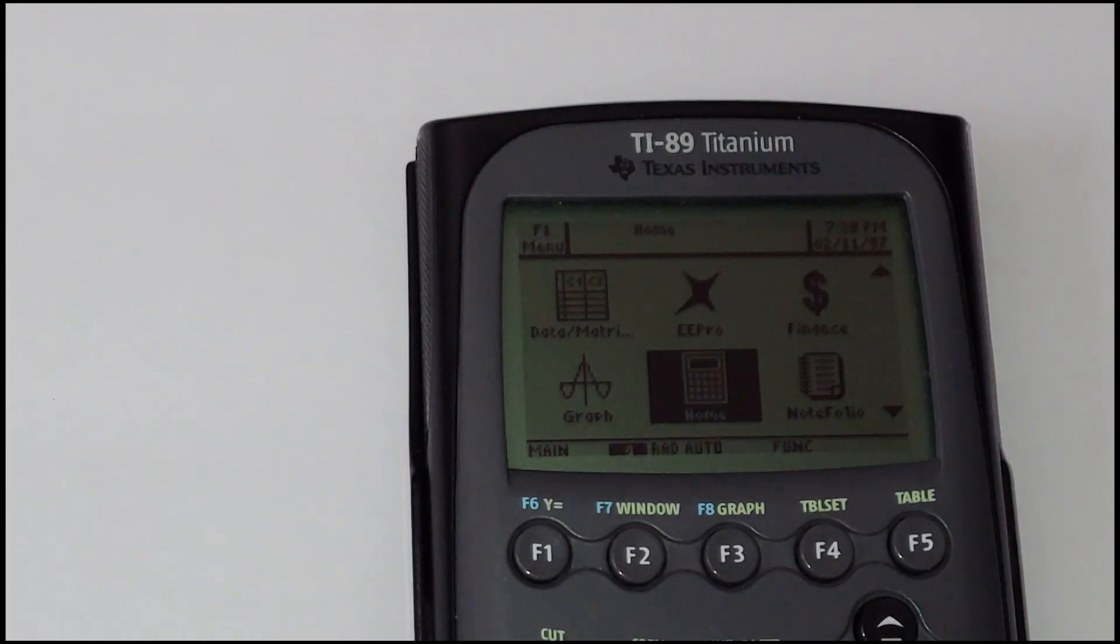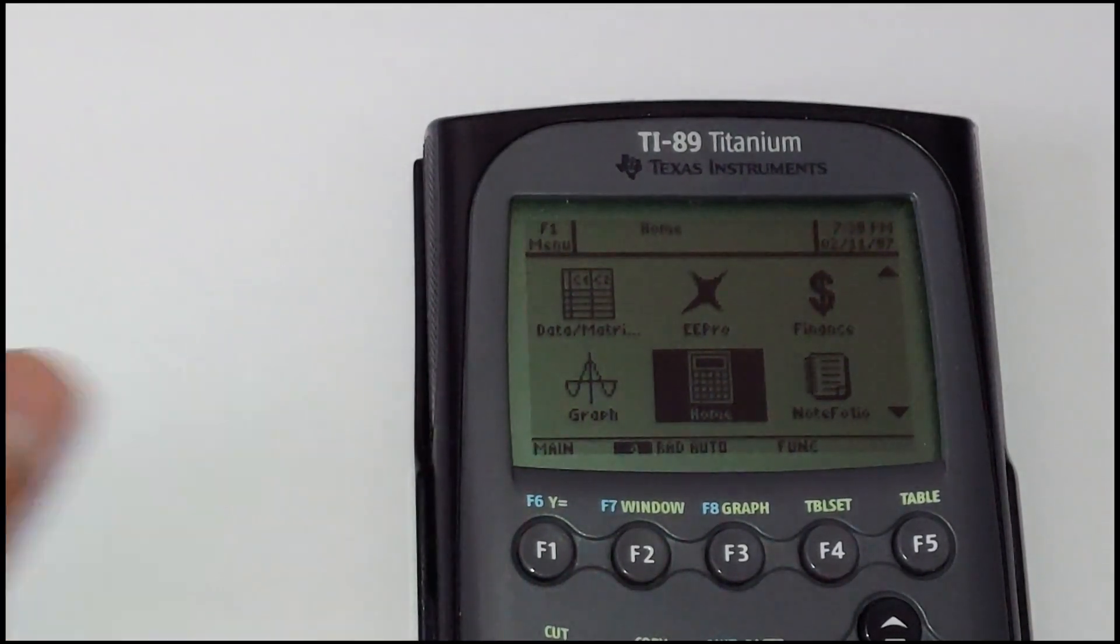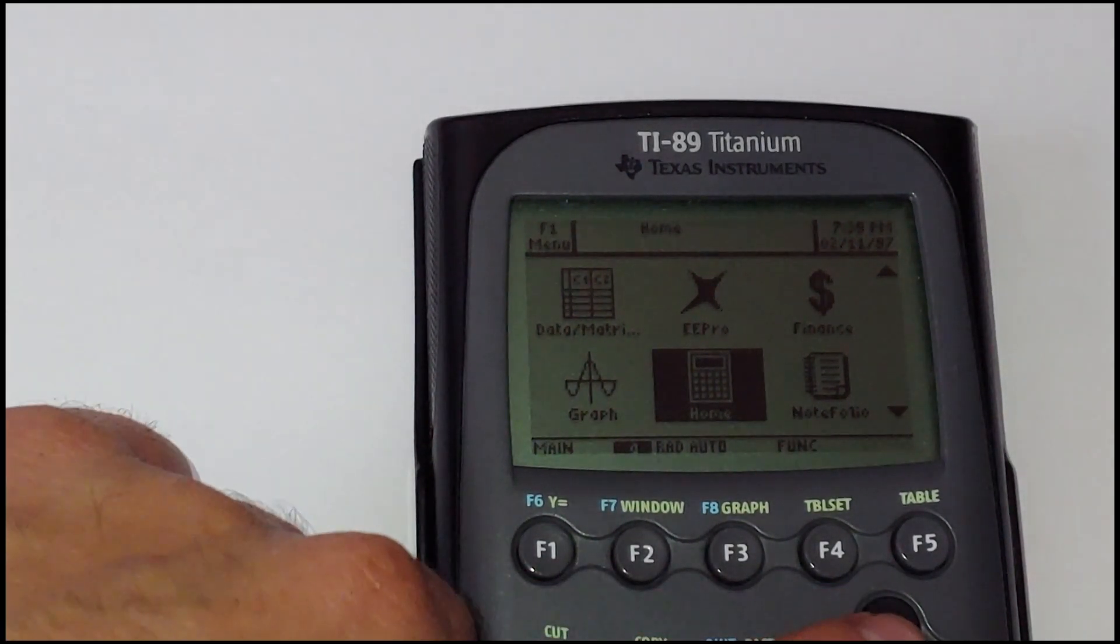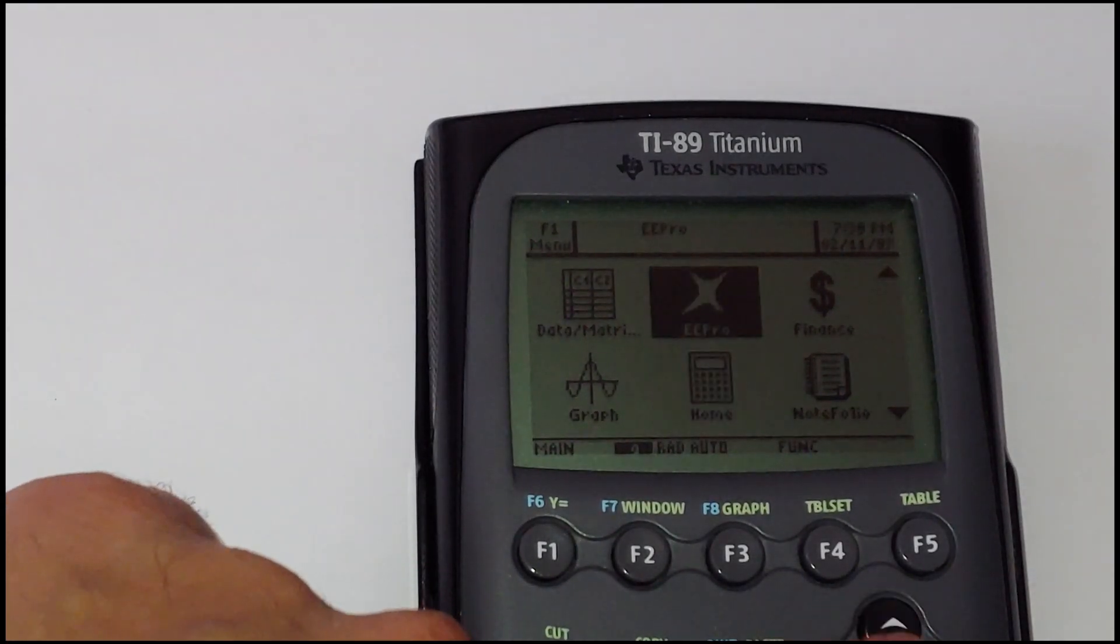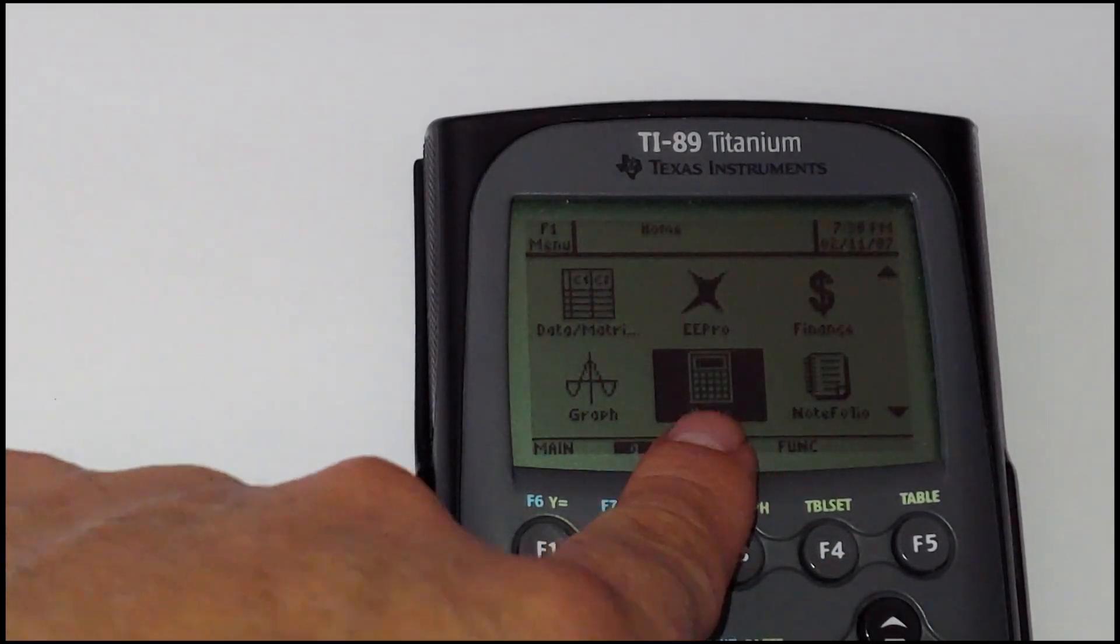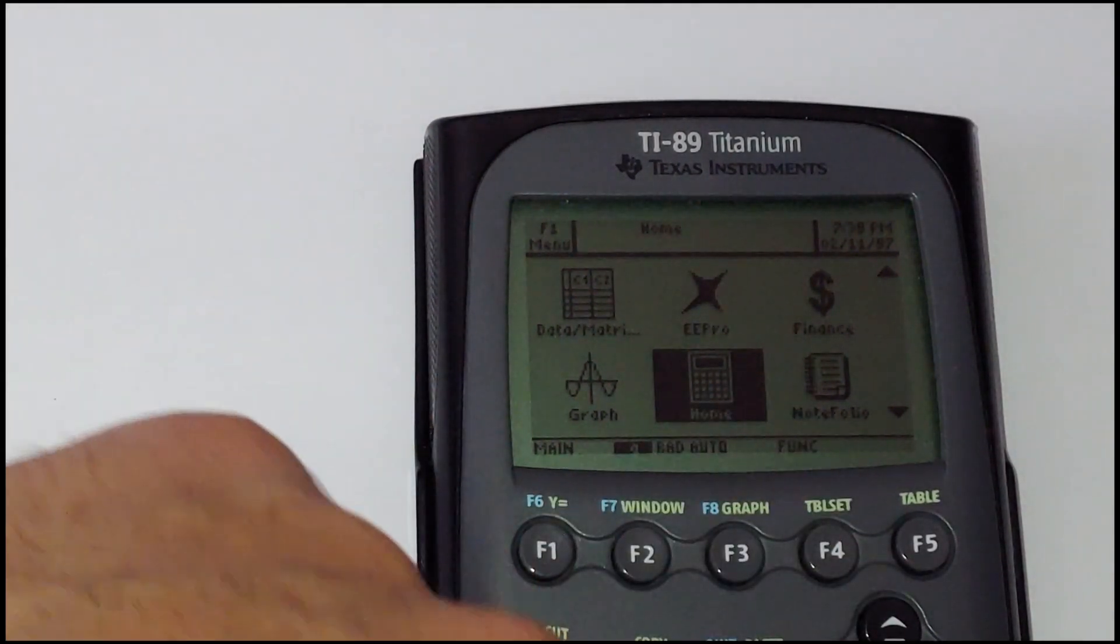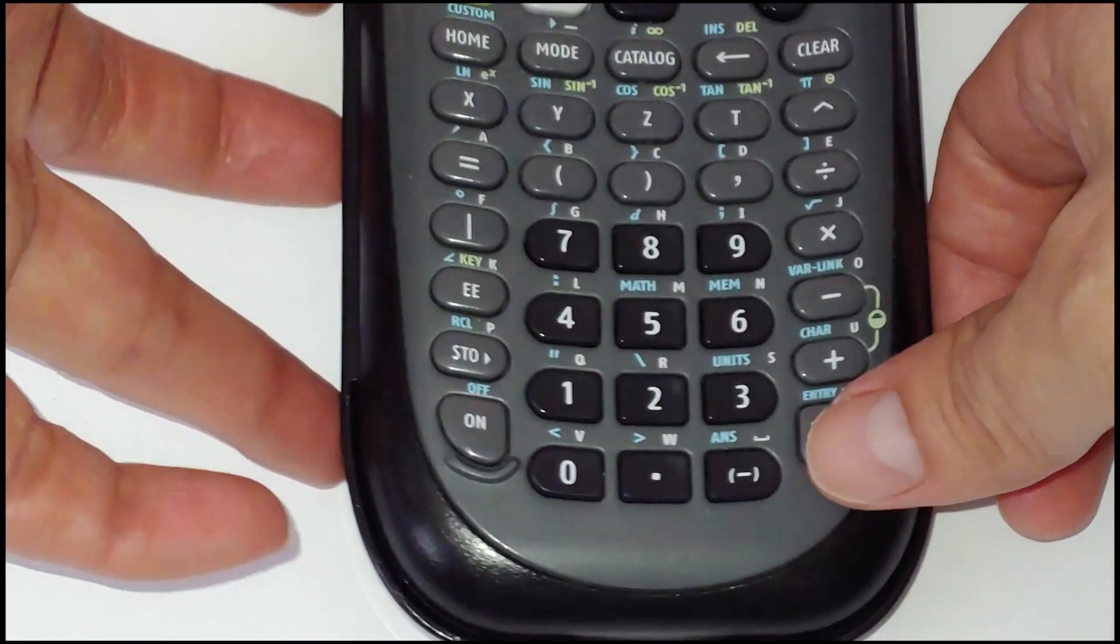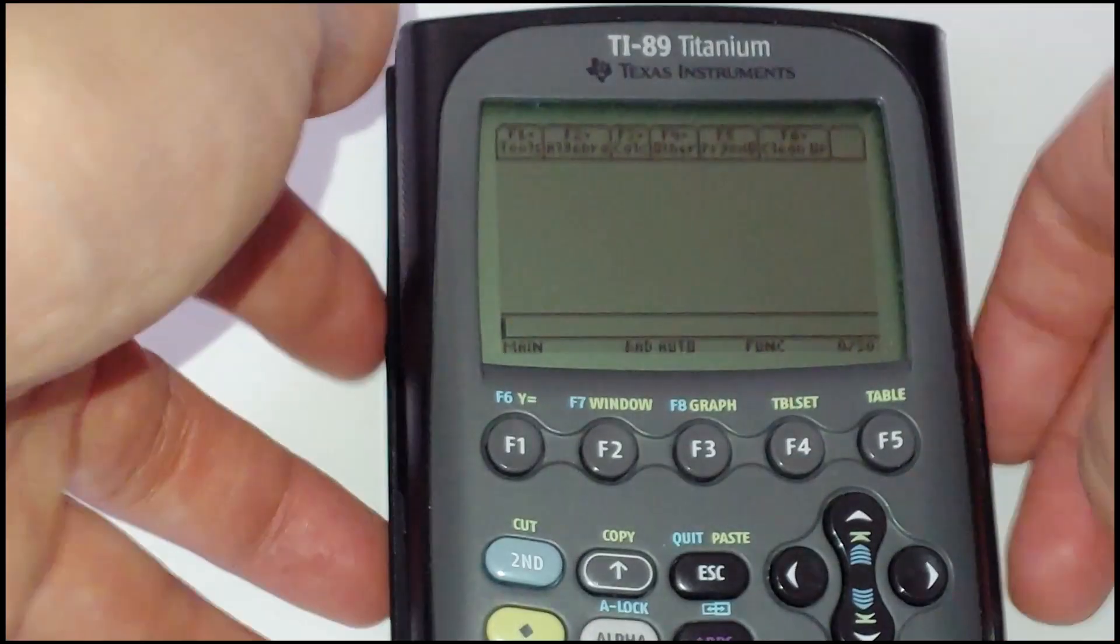And if you want to do your usual arithmetic calculations, you will have to go to where it says home. It's already selected home, and that's when you press enter, and you get your window.